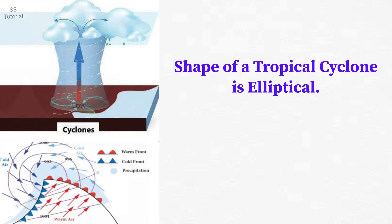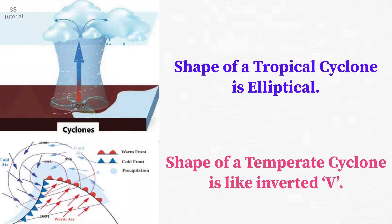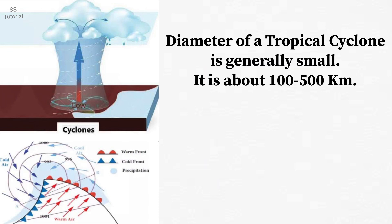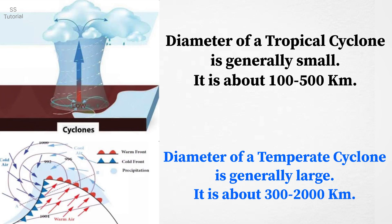Shape of a tropical cyclone is elliptical, whereas shape of a temperate cyclone is like an inverted V. Diameter of a tropical cyclone is generally small, about 100 to 500 kilometers, but diameter of a temperate cyclone is comparatively large, about 300 to 2000 kilometers.